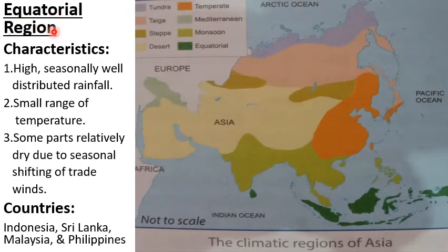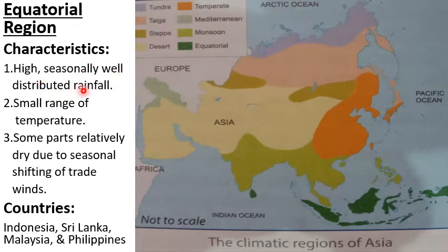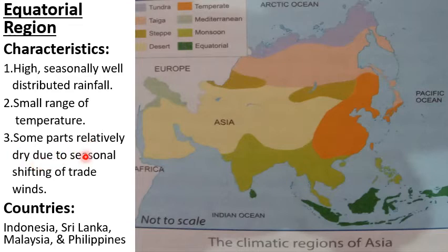Equatorial region. As the name suggests, equatorial means the area around the equator. Shown by dark green color here, the countries include Sri Lanka, Indonesia and all these islands that are parts of Indonesia, Philippines, and Malaysia. It experiences equatorial type of climate. The characteristics are high, well-distributed rainfall throughout the year, and a small range of temperature — meaning the difference between summer and winter temperature is very low — as this area does not have any distinct summer or winter season. Throughout the year it has the same season. Some parts are relatively dry due to the seasonal shifting of trade winds.